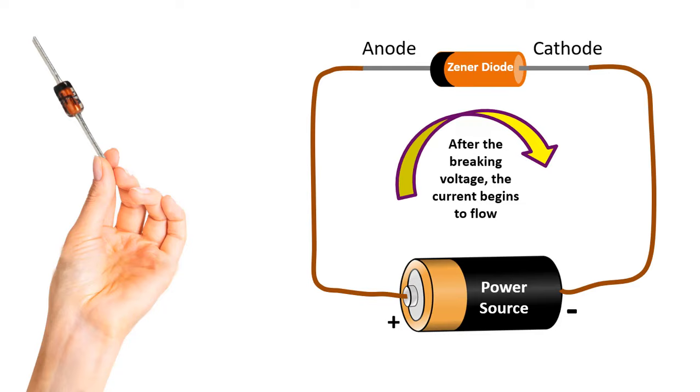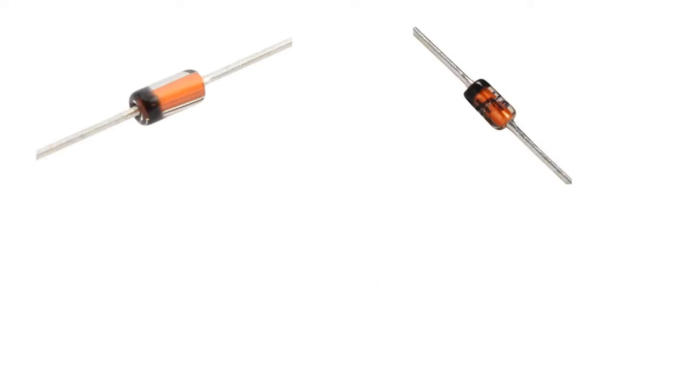In fact, we can say that it is a diode that flows current in both directions. They do the job of a voltage regulator. Their color is usually orange with a black stripe at the cathode tips. The symbol is like this.